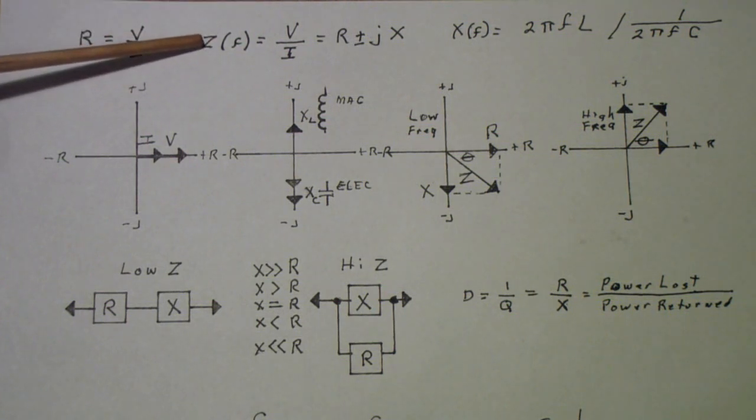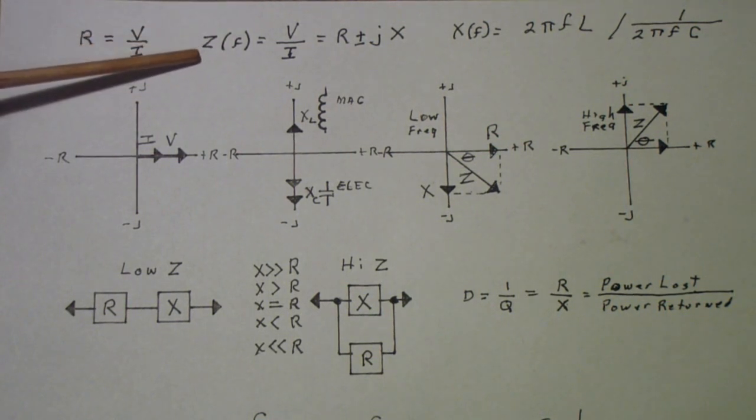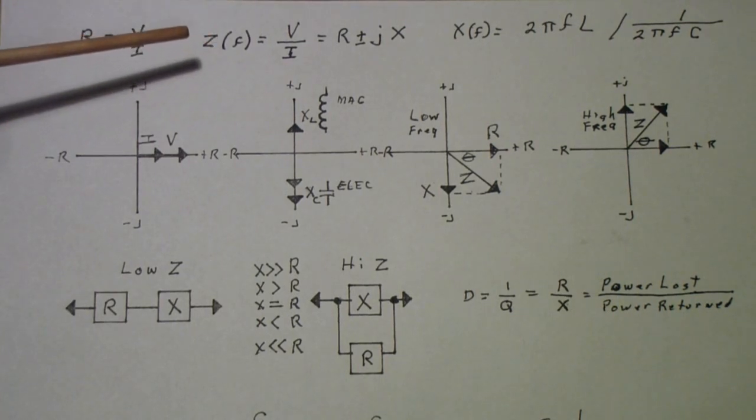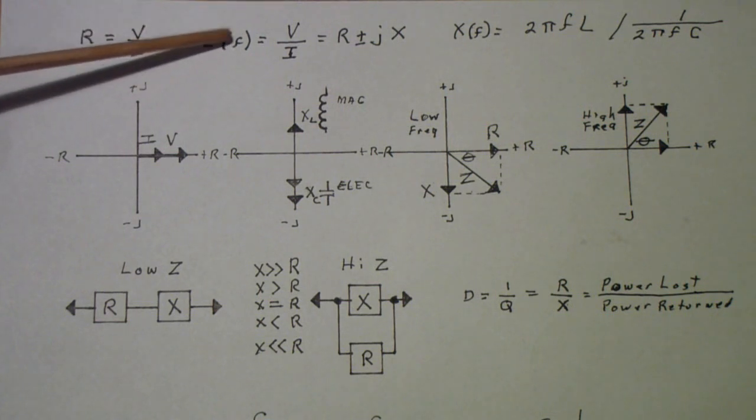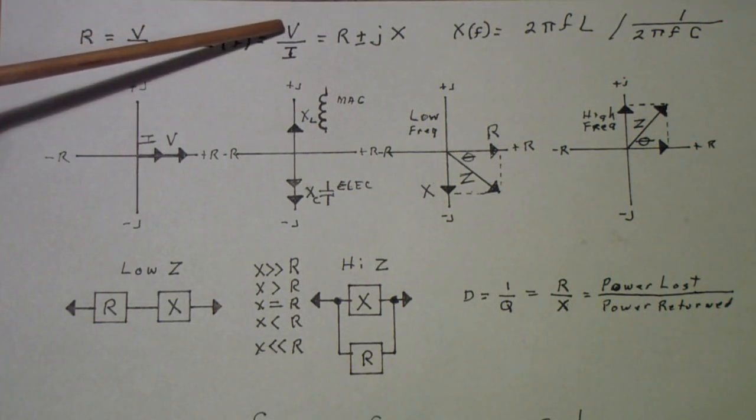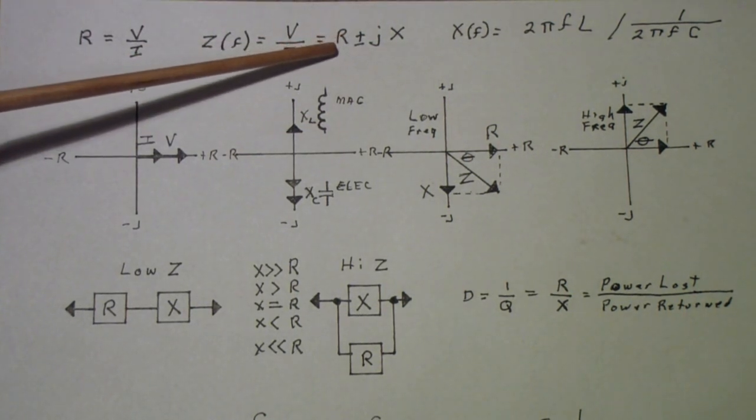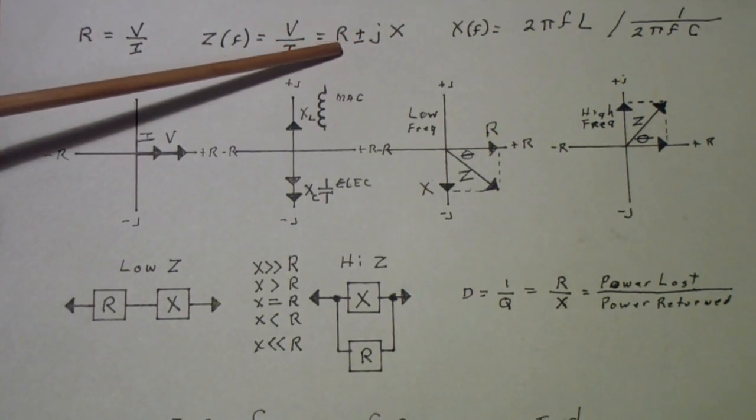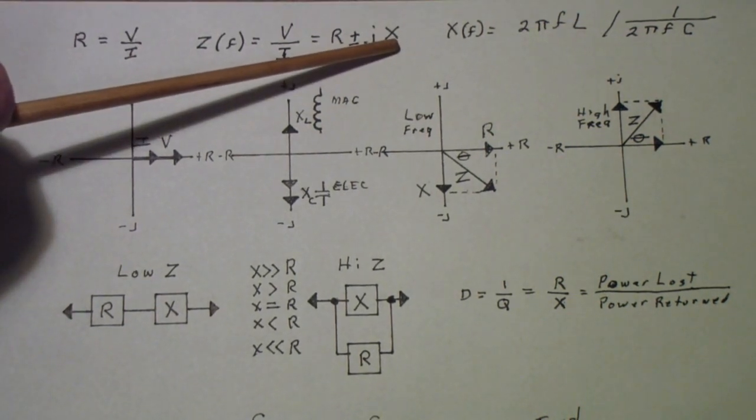For an AC circuit, you get instead of a resistance, you get an impedance, which is the combination of a resistance and a reactance. And that's a function of frequency. But once again, it's still just the voltage divided by the current. And it's often written as R plus or minus jX. All they mean here is there's a resistive component and then 90 degrees to that, there is a reactive component.